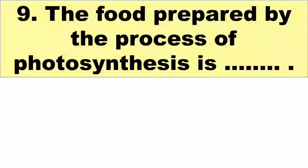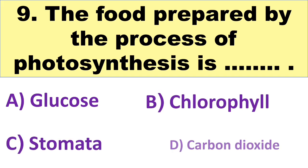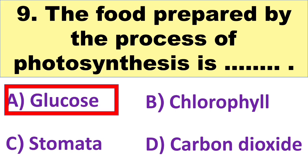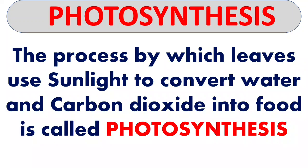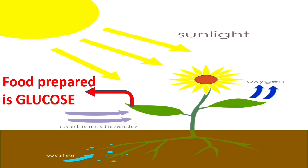The next question is: the food prepared by the process of photosynthesis is blank. Your options are A. Glucose, B. Chlorophyll, C. Stomata, and D. Carbon dioxide. The right answer is A. Glucose. Photosynthesis is the process by which leaves use sunlight to convert water and carbon dioxide into food. In the presence of sunlight, green leaves change water and carbon dioxide into food, and the food prepared is known as glucose.